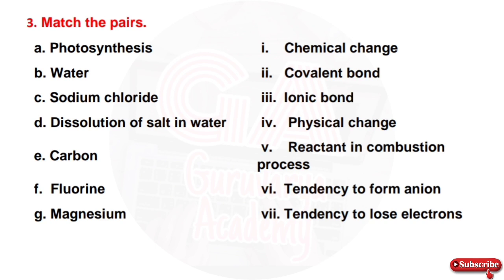Match the pairs: A — photosynthesis is a chemical change. B — water has a covalent bond. C — sodium chloride has an ionic bond. D — dissolution of salt in water is a physical change. E — carbon is a reactant in the combustion process. F — fluorine has a tendency to form an anion. G — magnesium has a tendency to lose electrons.